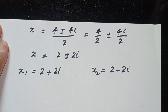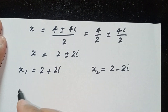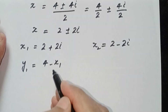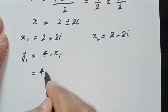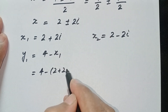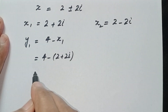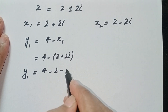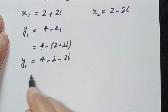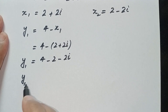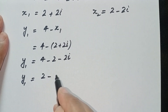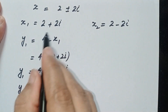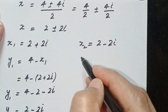To find the value of y for x₁, we have y₁ is equal to 4 minus x₁. Plugging in x₁ = 2 plus 2i, we get y₁ = 4 minus (2 plus 2i), which gives y₁ = 4 minus 2 minus 2i = 2 minus 2i. So the pair (x₁, y₁) is found.